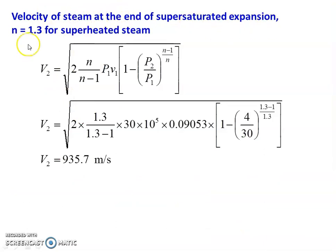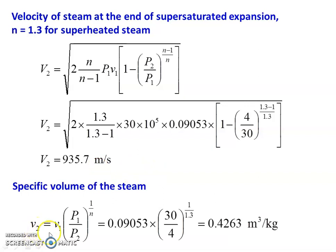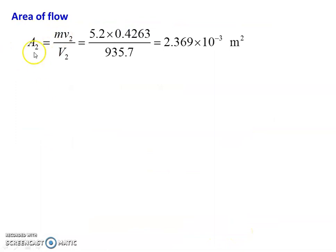The velocity at the end of supersaturated expansion for N = 1.3 (superheated steam): V2 = sqrt[(2N/(N-1)) × P1V1 × (1-(P2/P1)^((N-1)/N))]. Substituting: V2 = sqrt[2 × 1.3/(1.3-1) × 30 × 10⁵ × 0.09053 × (1-(4/30)^((1.3-1)/1.3))] = 935.7 m/s. Specific volume: V2 = V1 × (P1/P2)^(1/N) = 0.09053 × (30/4)^(1/1.3) = 0.4263 m³/kg. Exit area: A2 = M × V2 / capital_V2 = 5.2 × 0.4263 / 935.7 = 2.369 × 10⁻³ m².